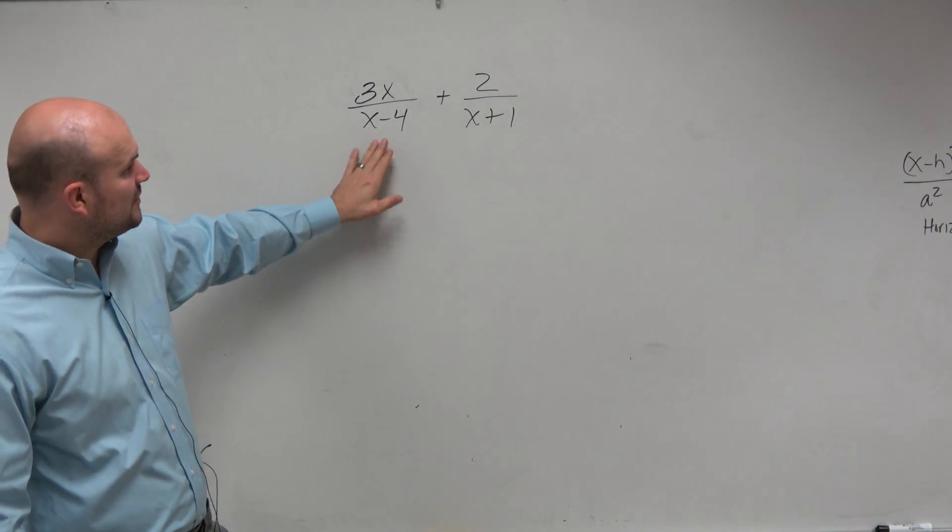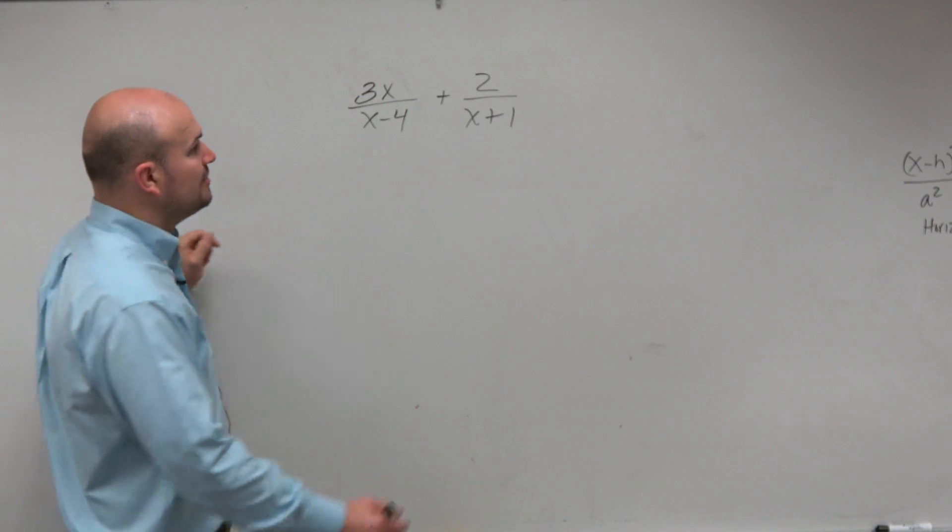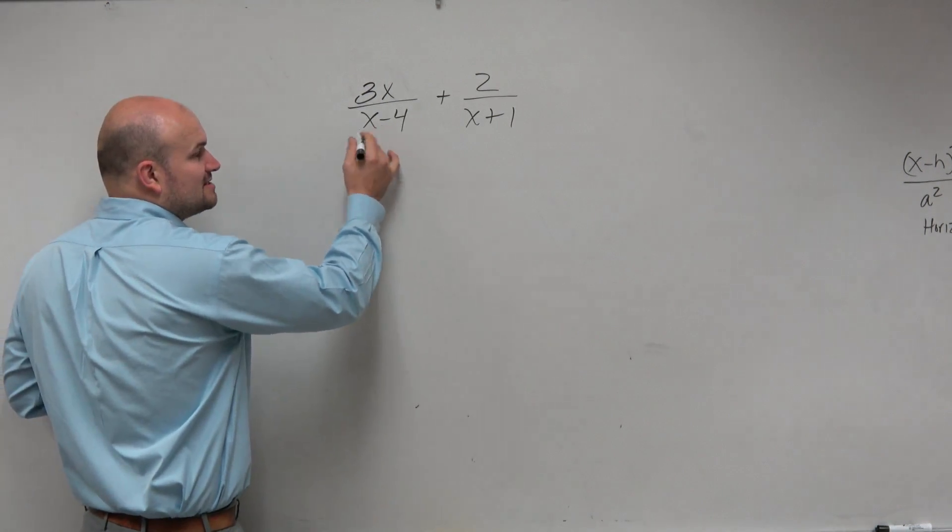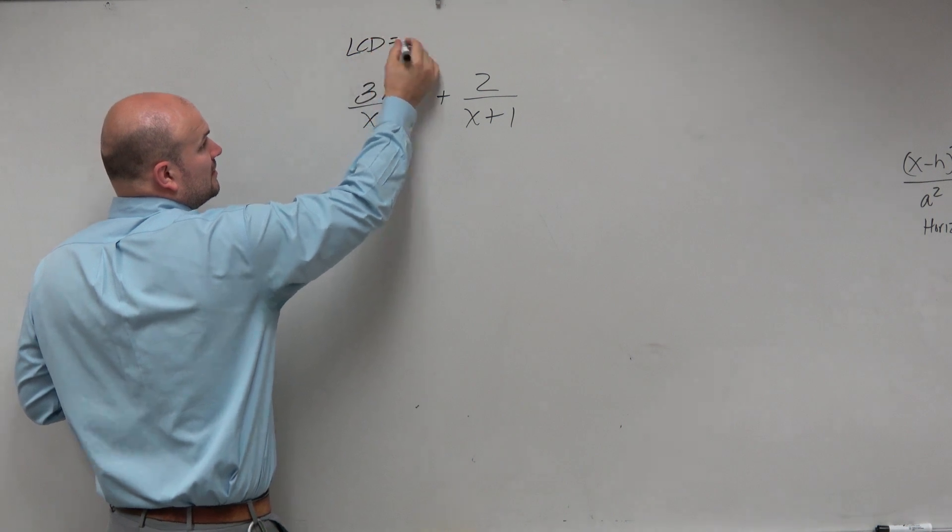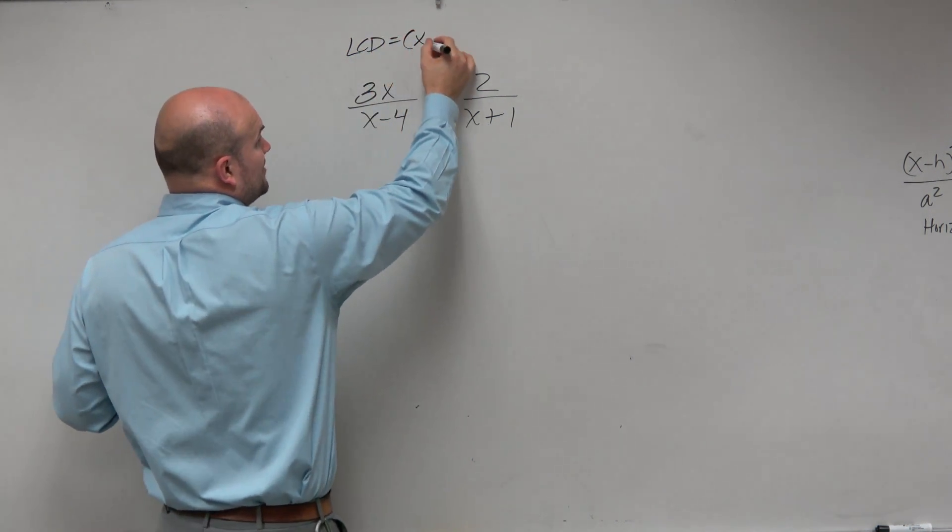So again, remember, we cannot add fractions unless we have common denominators. We realize that our common denominator is simply just going to be the product of our two denominators, x minus 4 times x plus 1.